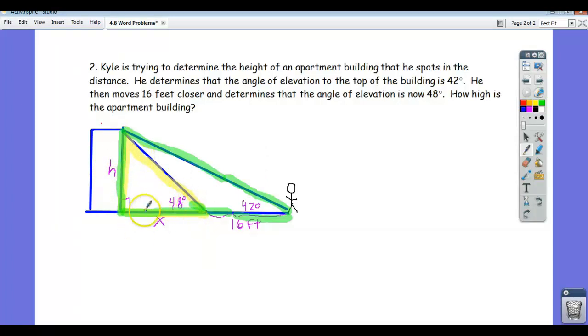So let's call the little triangle here, let's do the little triangle over here. Now, if we look just at the little triangle, again, I'm trying to find h, is there a trig function that relates this 48 degrees with the h and the x?